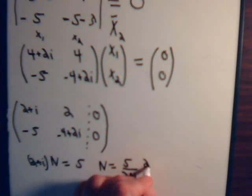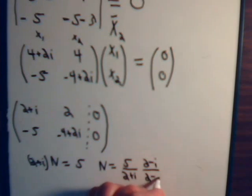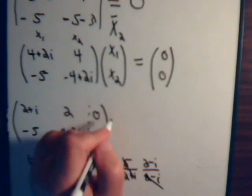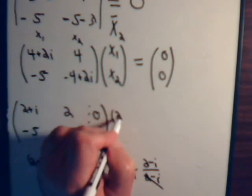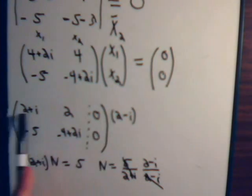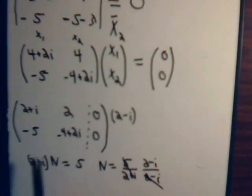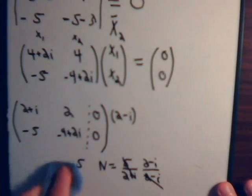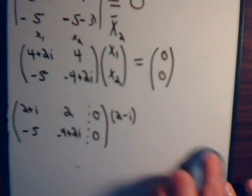So, that number will equal 5 divided by 2 plus i. And we can rationalize like this. 2 plus i times 2 minus i, that is 5. So, this is just 1. So, the number we multiply the first row by is 2 minus i. Which is what we would do. Multiply the whole row by this and add it to this row to knock this out. As we do when we're trying to solve augmented matrices.